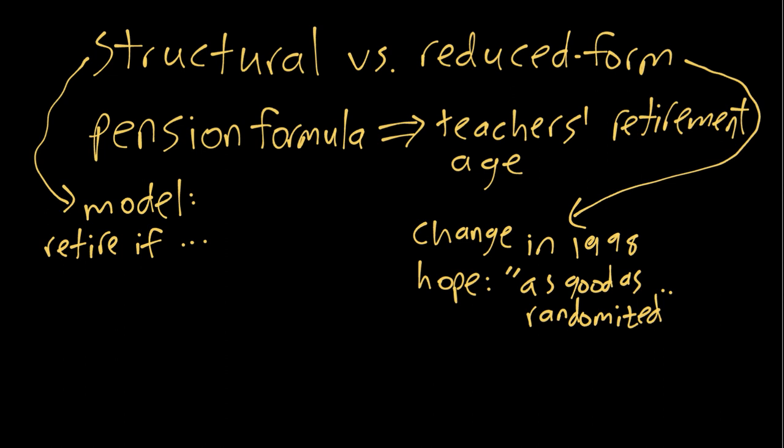You have some value function and you're trying to optimize this decision for whether or not to retire. Of course once you retire you can't un-retire, so they're trying to consider that. It's trying to come up with this explicit economic model for teachers' decisions and behaviors that includes the pension formula as part of that model.